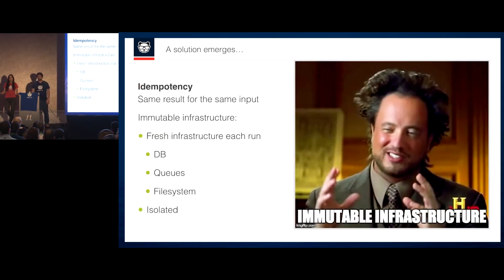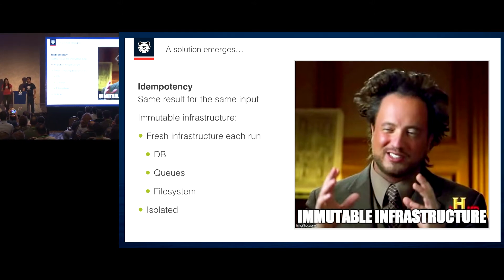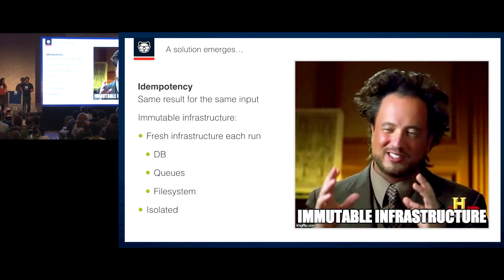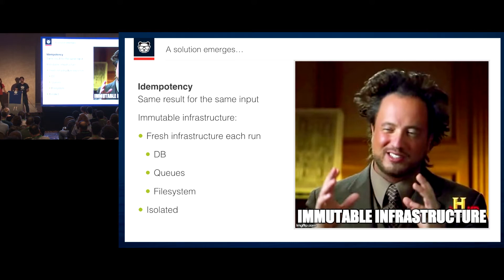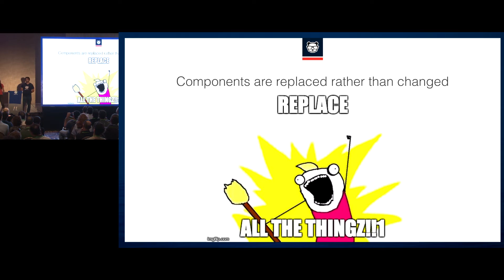So we had to think of a solution, and we found something called immutable infrastructure. Immutable infrastructure is built around the concept of idempotency — other than just being a really hard word to pronounce, it's the idea that running the same input on the same function will always give the same output. The infrastructure is the function. So we always need fresh DBs, fresh queues, fresh filesystem, fresh everything — completely isolated — replacing all the components instead of changing them at each run.